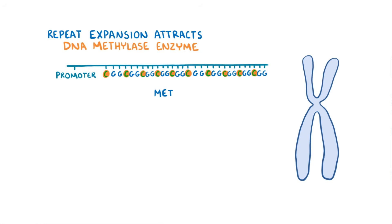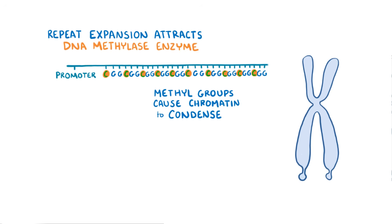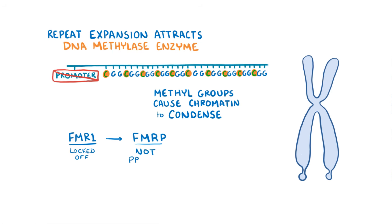These bulky methyl groups cause the chromatin, which is DNA wrapped around histones, to condense. When it's in a condensed form, regions of the FMR1 gene can't be bound by transcription factors. As a result, the promoter of the FMR1 gene is locked in the off state, so its product, FMRP, can't be made in adequate amounts, and that leads to Fragile X syndrome.